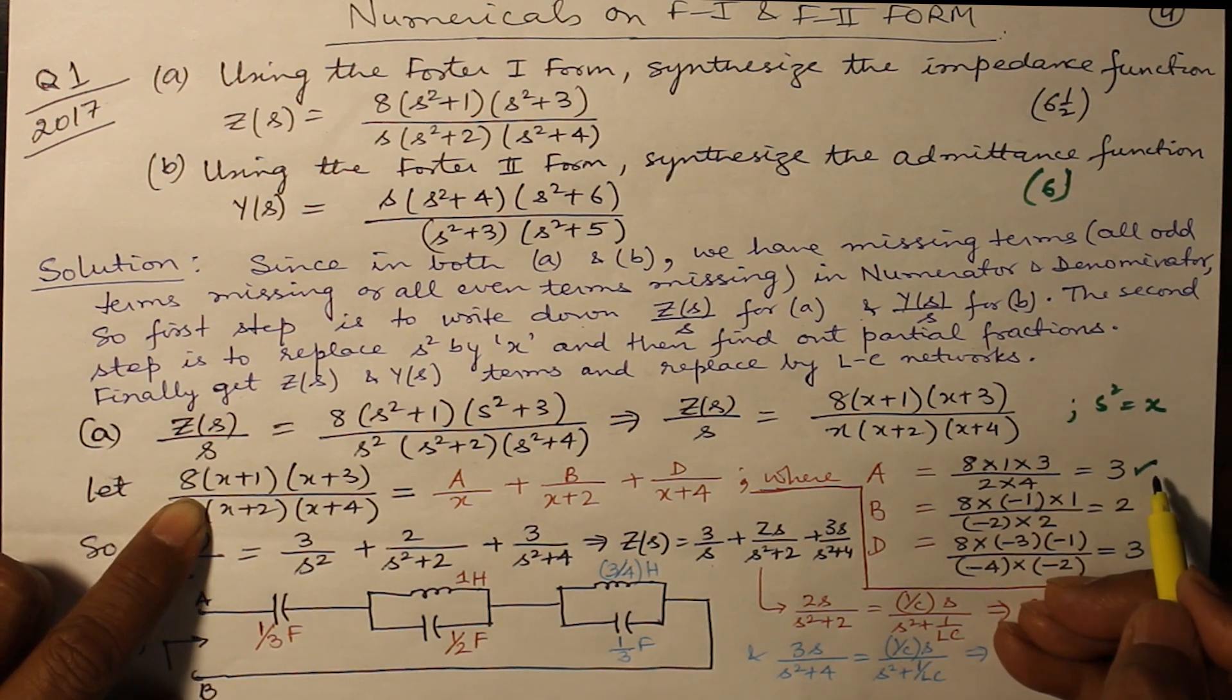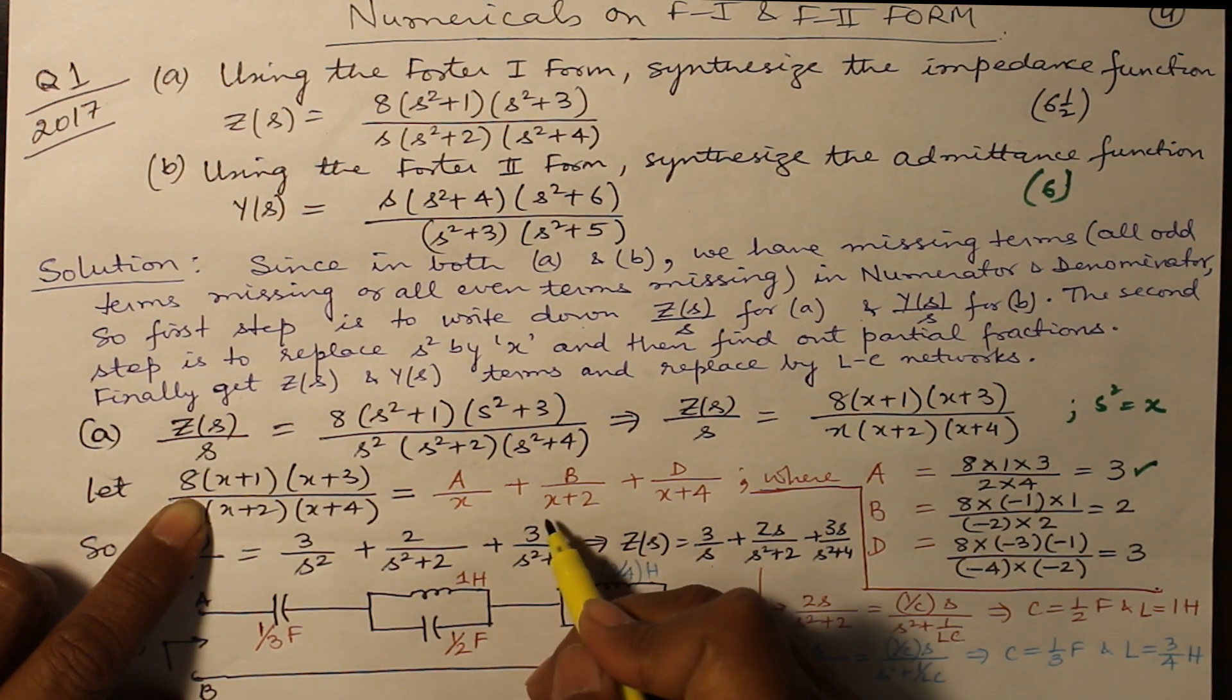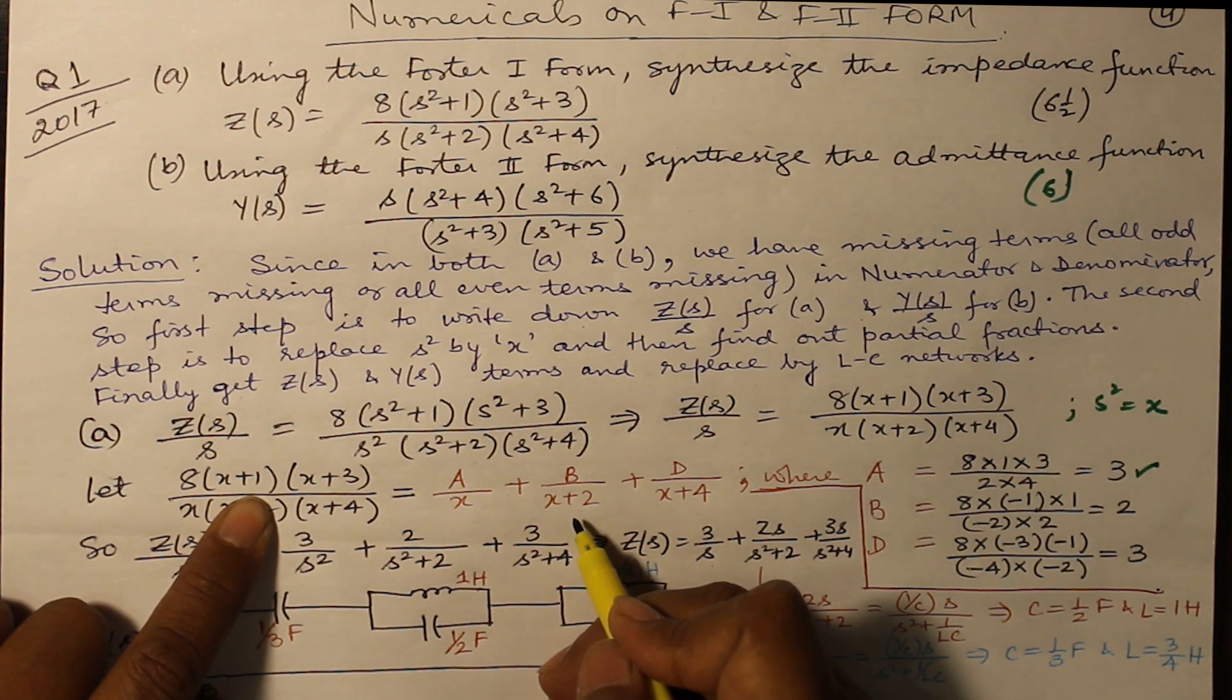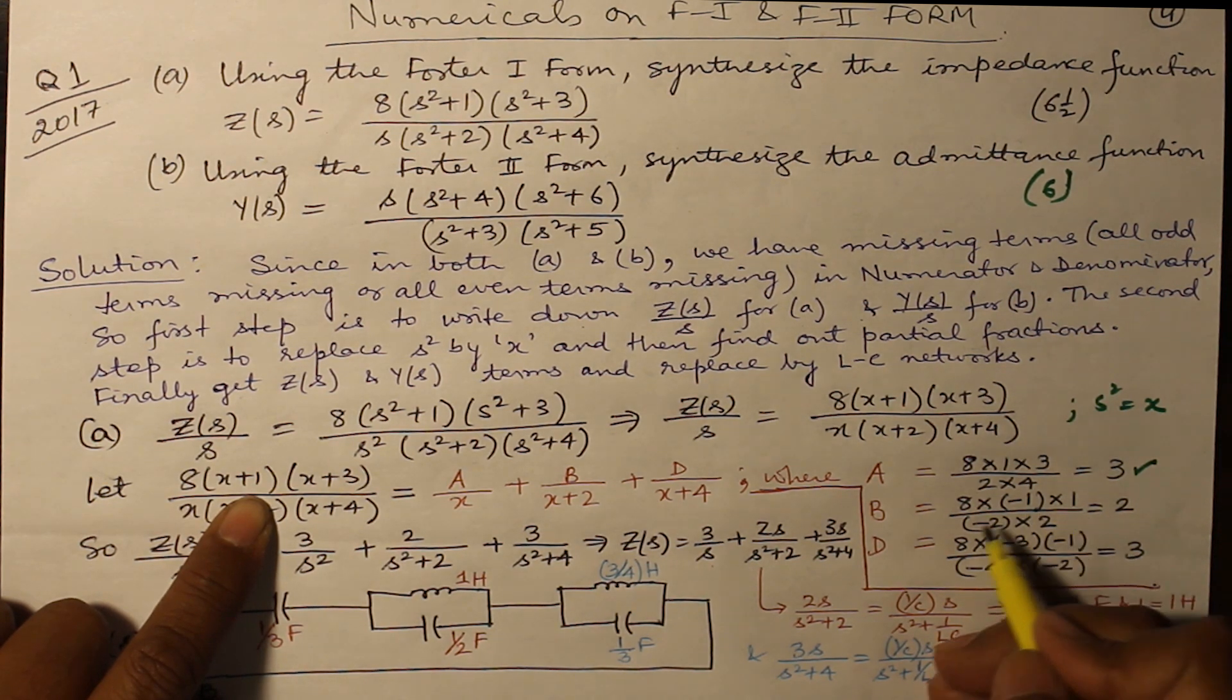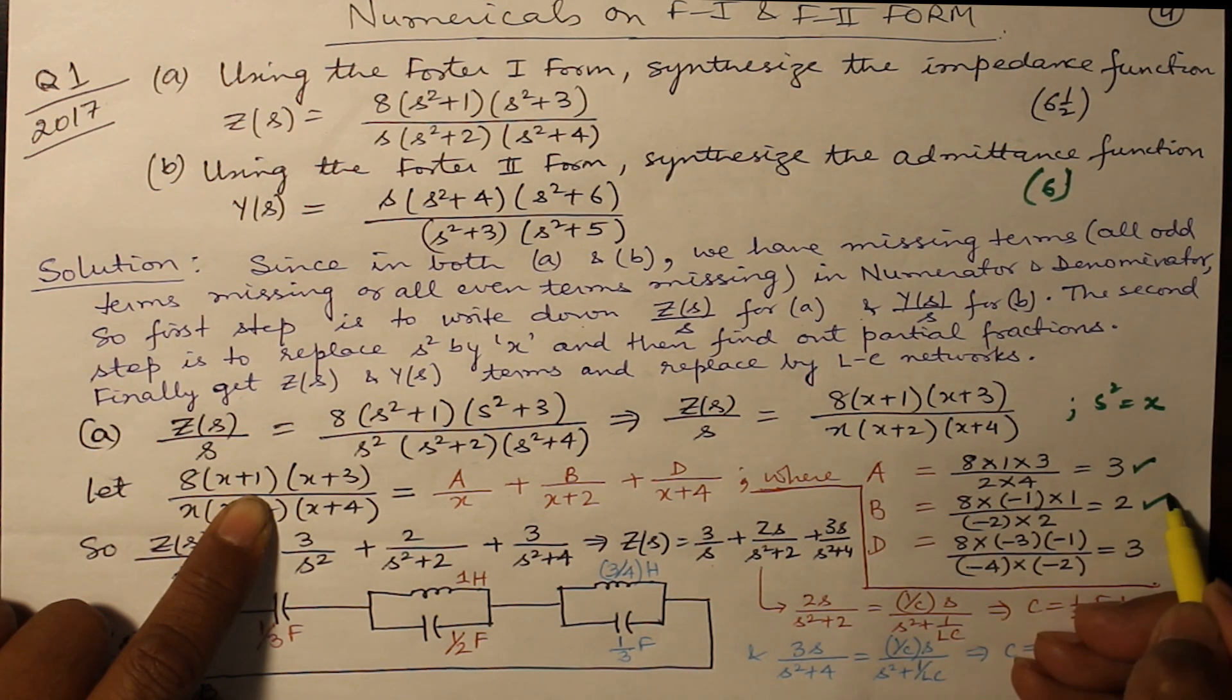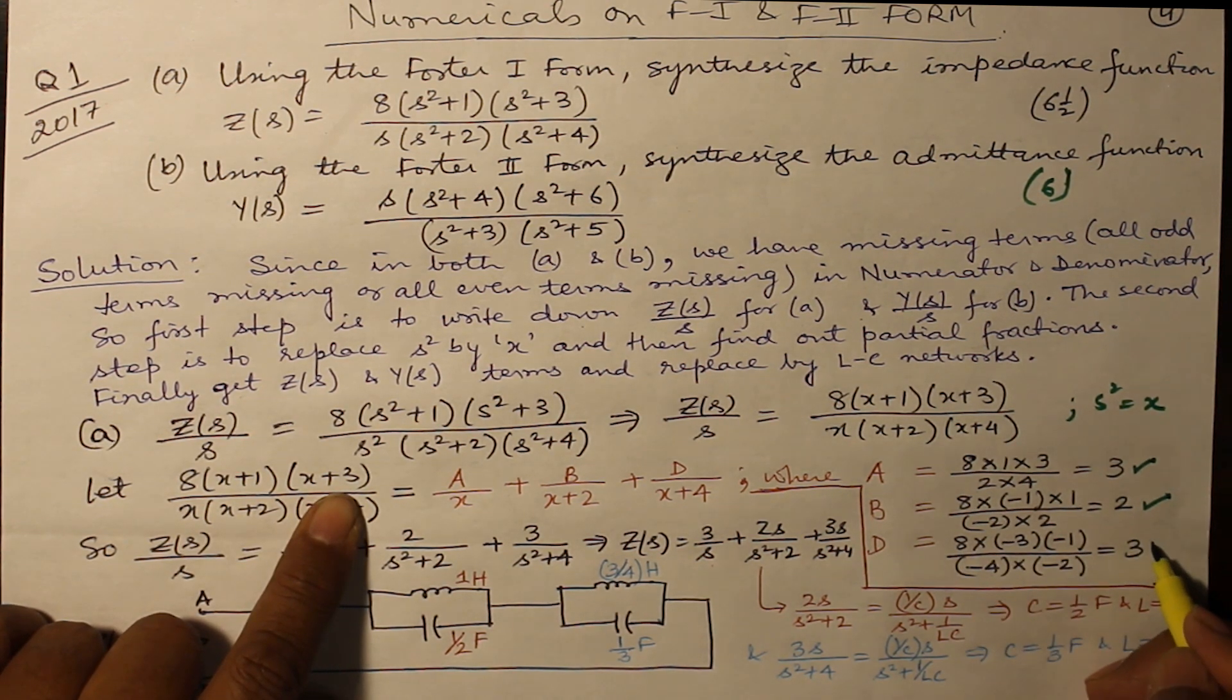If you want to find out b, in the denominator you are having x+2. So x+2 equals 0 is going to give you x equals -2. Put your hand on this x+2 and put x equals -2. So 8×(-2)+1 is -1. -2+3 is 1. -2 as it is, and here -2+4 gives you 2. On solving, this gives you 2. Coming on to d, in a similar manner, put x equals -4 and you get the result 3.